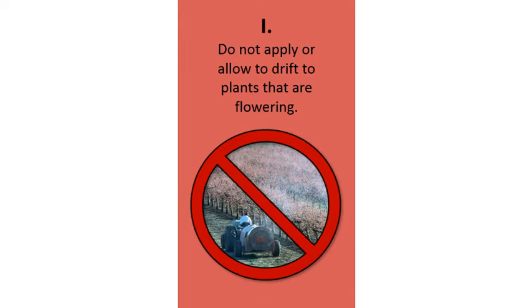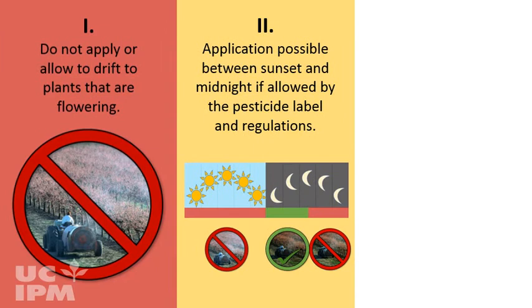Pesticides rated 2, or yellow, should not be applied or be allowed to drift onto plants that are flowering. The exception is that an application can be made between sunset and midnight if allowed by the pesticide label and regulations.